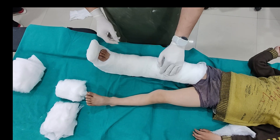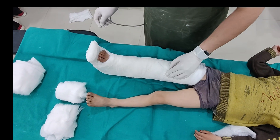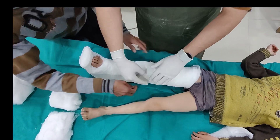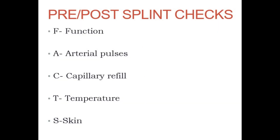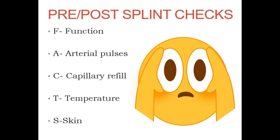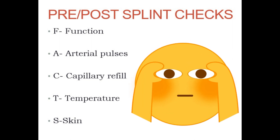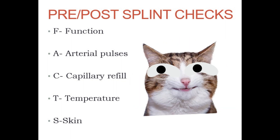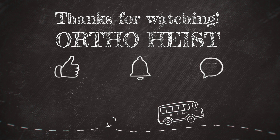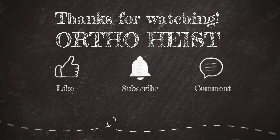The idea of splinting is to make the patient pain-free and comfortable, and it should facilitate transportation. After application of this above-knee crammer wire splint, the child will be sent to the X-ray department so that X-rays can be done. Pre and post application of a splint, one should carefully observe the distal neurovascular status: distal pulses, capillary refill, temperature, and condition of the skin of the toes and fingers. I hope you enjoyed the video — kindly like, subscribe, and comment. Thanks for watching.